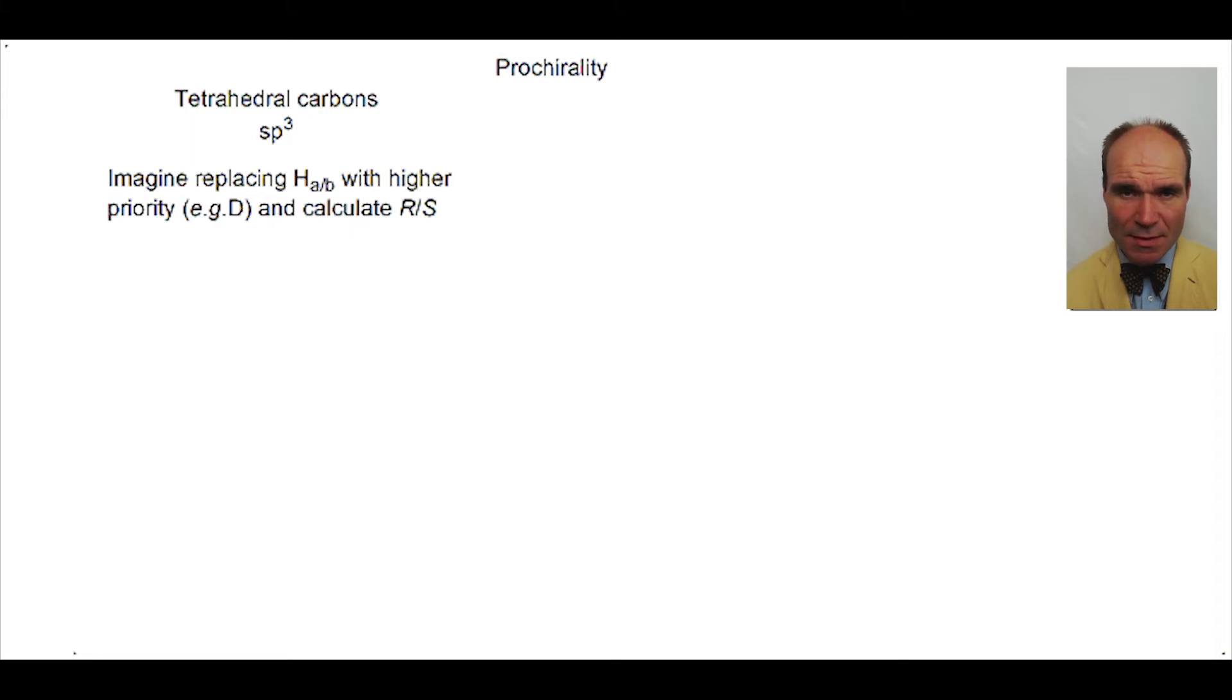Where two of the substituents are the same we can ascribe imaginary difference to them. The same substituents here are hydrogens. We will call them HA and HB. They are prochiral.